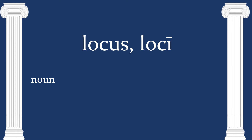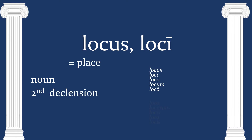Next we have locus, loci — a second declension noun. It's masculine, sort of; I'll explain why in a moment. It means place. What's weird about this is it starts off masculine: locus, loci, lusio, um, o — no problem there. But then it changes gender and becomes a neuter noun in the plural, going from masculine to neuter. There are some nouns that do this.